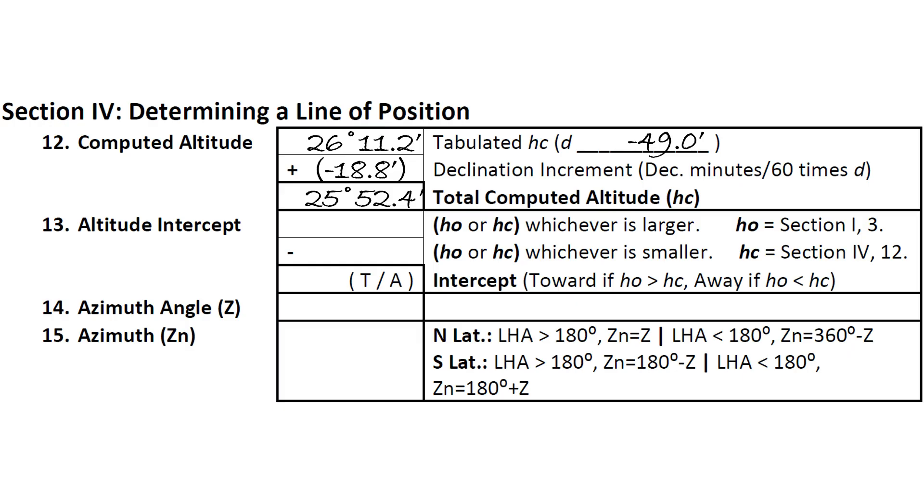To find our altitude intercept, we need to take the difference from our computed altitude, or HC, which we just calculated, and the observed altitude, or HO, from Section 1.